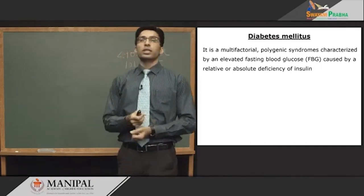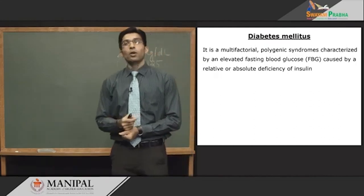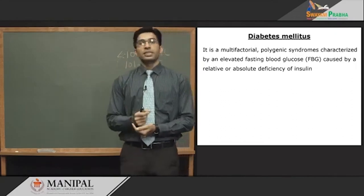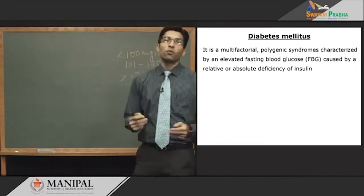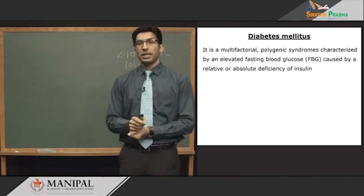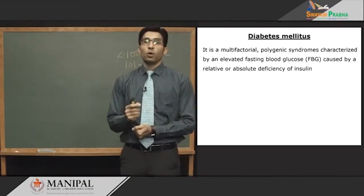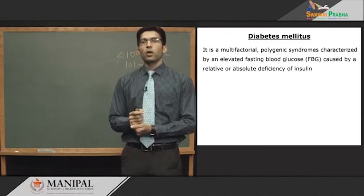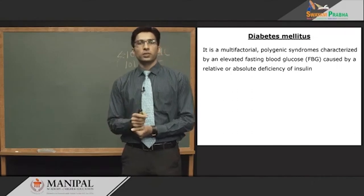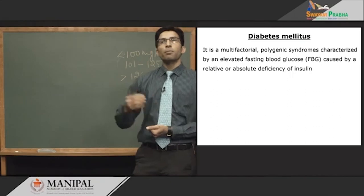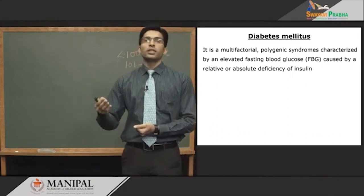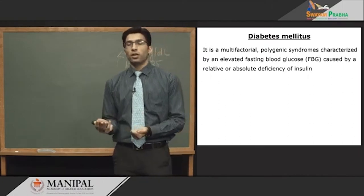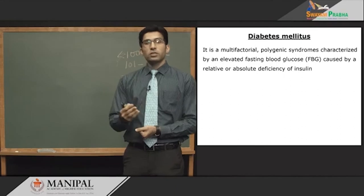If fasting blood glucose level is more than 126 mg/dL with the characteristic features of diabetes, then it is called diabetes. It is a multifactorial, polygenic syndrome characterized by elevated fasting blood glucose caused by relative or absolute deficiency of insulin. Relative means insulin secretion is reduced; absolute means there is no insulin at all — that is type 1 diabetes.